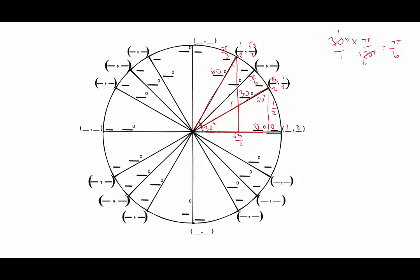Continuing on, at the top we have 90 degrees, which is equivalent to pi over 2. We don't need anything fancy here — we're on the positive y-axis of the unit circle, so the point is (0, 1).